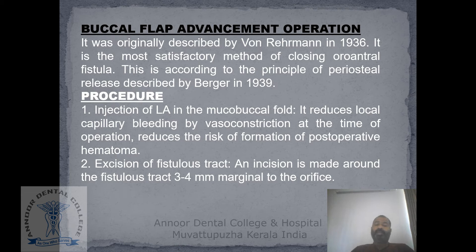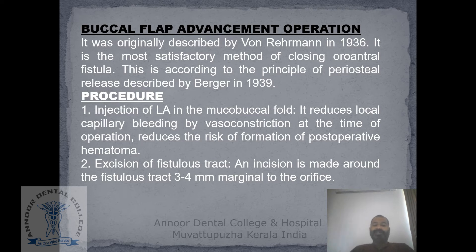The buccal advancement flap is one treatment option, also called the Von Rahn flap, which was described in 1936. The procedure begins with local anesthesia injection. The fistulous tract is excised, and the incision is made around the fistulous tract three to four millimeters marginal to it. Then two divergent incisions are made with a number 15 blade.